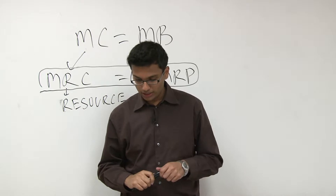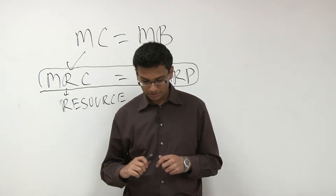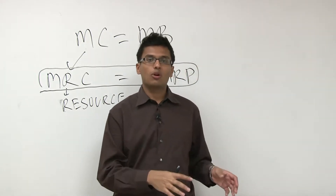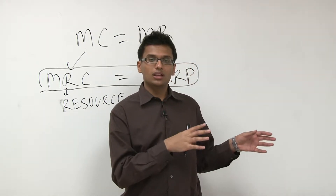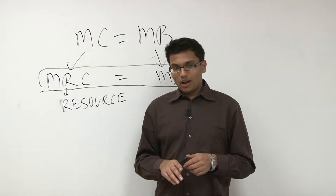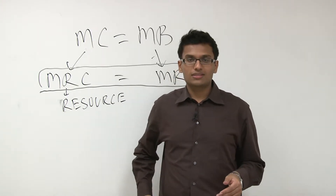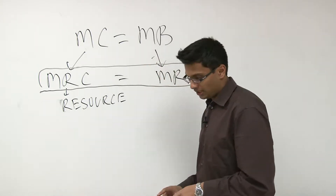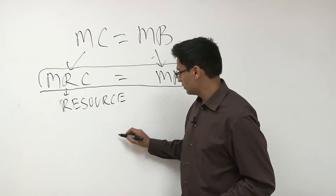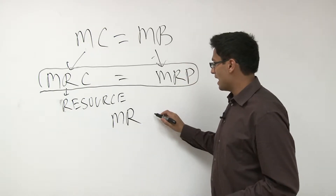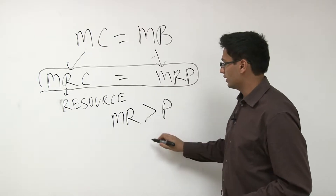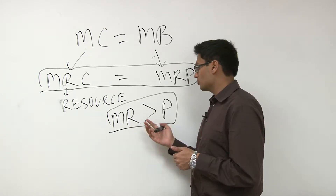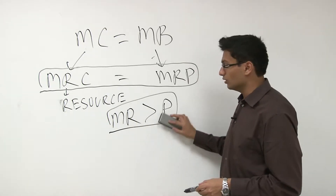In theory, we've always said that MR equals P — that marginal revenue equals price. Unfortunately, in the real world it doesn't work exactly that way; that's more theoretical. In the real world, marginal revenue is actually greater than price. In competitive markets we've discussed, marginal revenue is equal to price — keep that in mind, and we'll come back to this later.